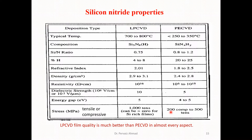For PECVD silicon nitride, stress transitions from compressive at around 200 MPa to tensile at around 500 MPa depending on deposition conditions. The overall film quality of LPCVD is much better than PECVD in almost every aspect, as seen in the property comparisons.